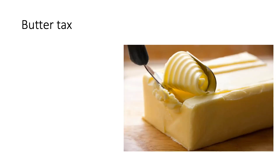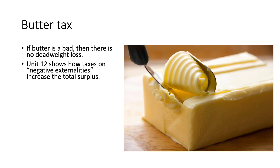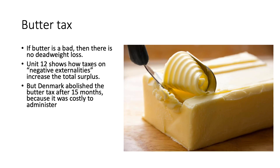Assessing the qualitative aspects of the butter tax: if butter is a bad — if it's harmful — then we can somewhat ignore the deadweight loss in the process. Unit 12 will show how taxes on negative externalities can actually increase total surplus, since third parties are harmed by certain goods. However, Denmark abolished the butter tax after 15 months because it was too costly to administer.